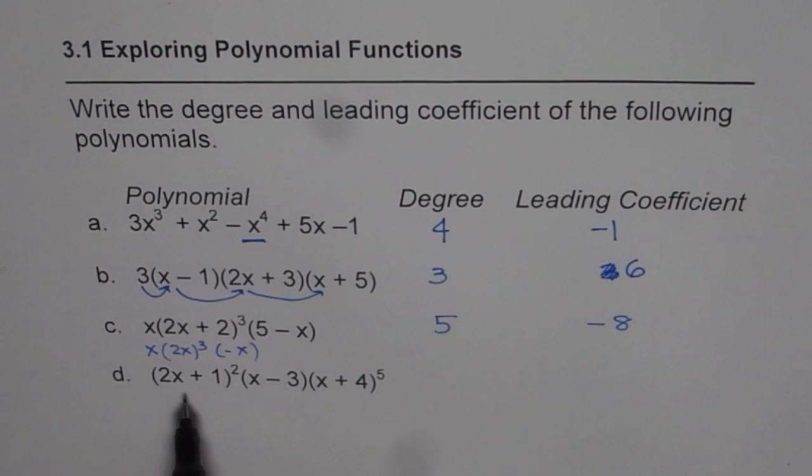Now the last one here is given in factored form. Degree you can count. When you multiply them, 5, 6 and 1 and 2, 8. So the degree is 8. It is an even degree function.